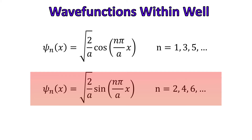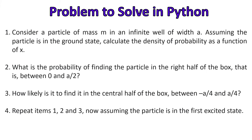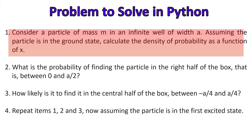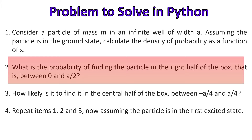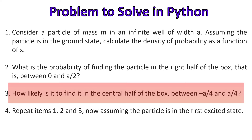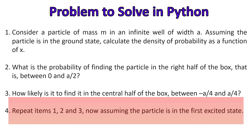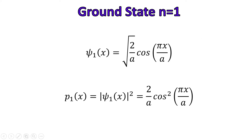The problem we will solve is: consider a particle of mass m in an infinite well of width a. Assuming the particle is in the ground state, calculate the probability density as a function of x. What is the probability of finding the particle in the right half of the box, between 0 and a/2? How likely is it to find it in the central half of the box, between −a/4 and a/4? Repeat items one, two and three now assuming the particle is in the first excited state.